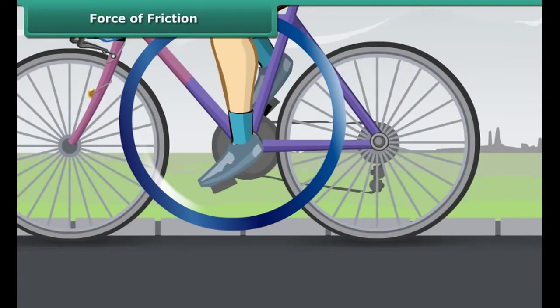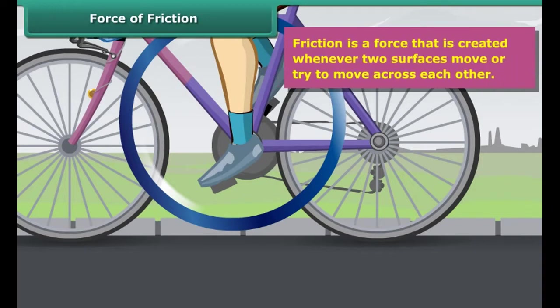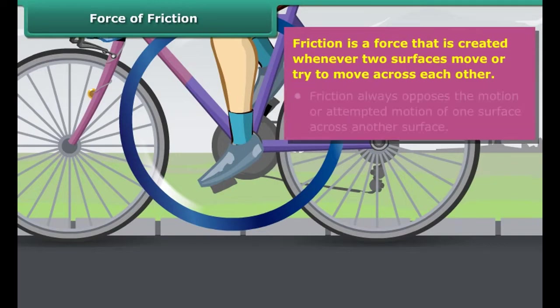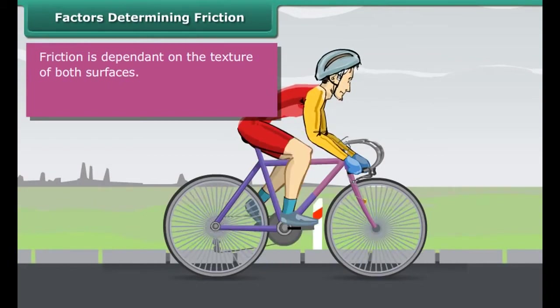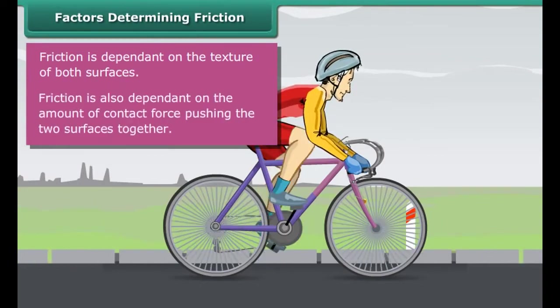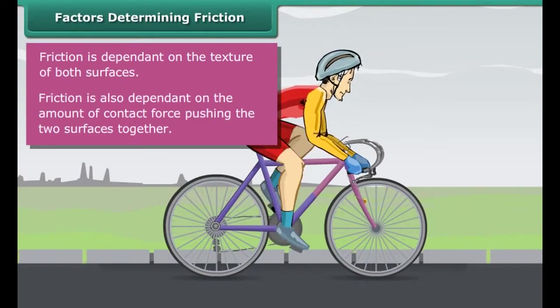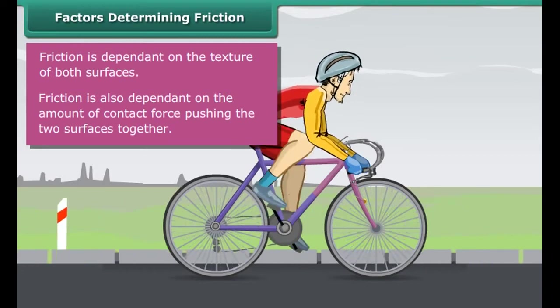Let's take an example from daily life. While moving on a bicycle on the road, you pedal the bicycle and it moves on and on. When you stop pedaling, the bicycle slows down and gradually comes to a stop. Why does this happen? This actually happens because of friction.